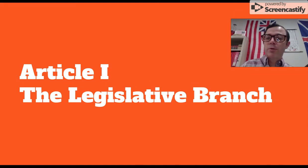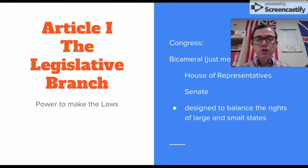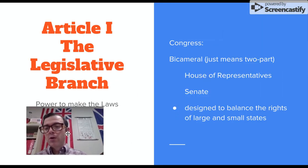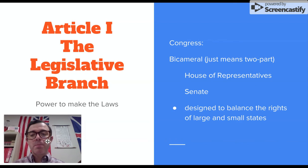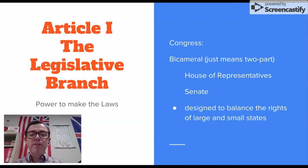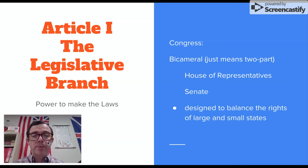Welcome back. Today we're going to be looking at Article 1, which is the legislative branch. In Article 1, the legislative branch was designed to have the power to make the laws. It is made up of a group called Congress, which is bicameral — that's just a fancy word that means two parts. So it's going to be made up of the House of Representatives and the Senate.